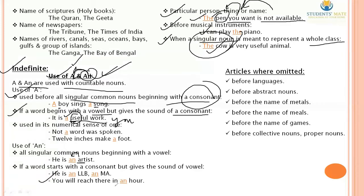You will reach there in an hour. The same rule applies to abbreviations — for example, 'He is an LLB' or 'He is an MA.' The word 'MA' starts with a consonant letter, but the sound it produces is a vowel sound ('em'), so 'an' is used before it.